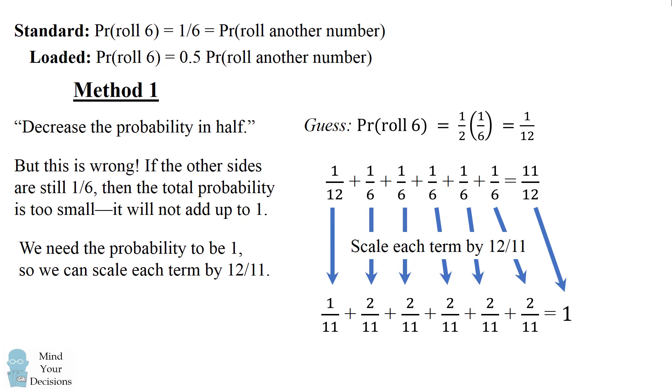So 12 over 11 times 1 over 12 is equal to 1 over 11. And 12 over 11 times 1 over 6 is equal to 2 over 11. And when we sum these new probabilities, we do in fact get that the total probability is equal to 1. So this is the correct answer. The probability of rolling a 6 will be equal to 1 over 11.